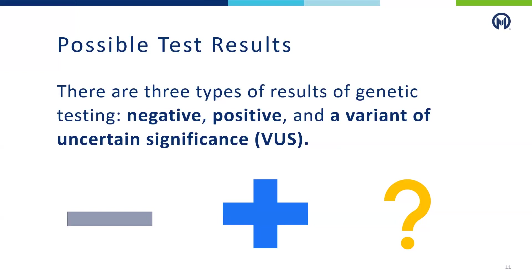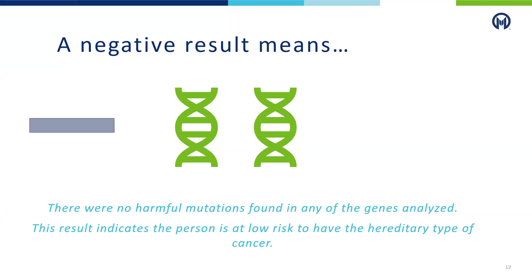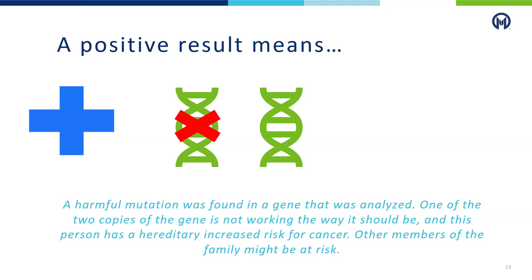There are three possible test results for genetic testing: negative, positive, and a variant of uncertain significance, also called VUS. A negative or normal result is the most common. A negative result means that no harmful mutations were found and it is much less likely for there to be a risk of hereditary cancer. If a positive result is found, a harmful mutation was identified in one of the analyzed genes. This means that one of the two copies of this gene is not working the way it should be, which indicates a hereditary increased risk for cancer.